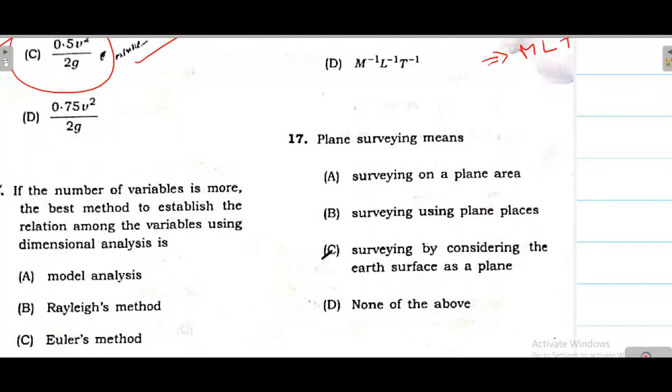In plane surveying, we consider the earth's surface as plane. Option C is correct - earth surface is considered flat, meaning plane. That's why it is called plane surveying. We don't consider the arch surface. That means we don't take the curvature effect. So option C is correct.